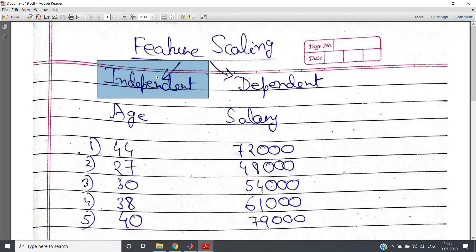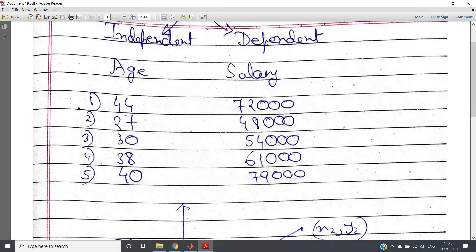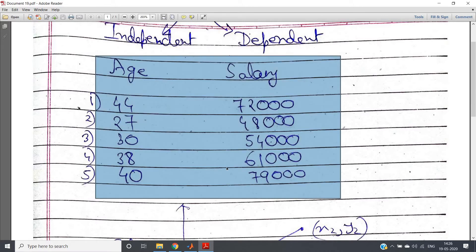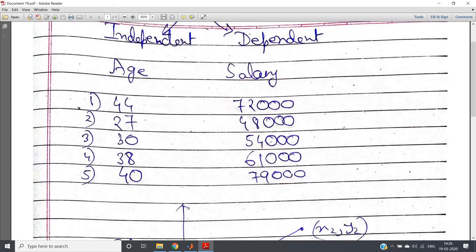For example, suppose we are having one age and salary dataset. We can predict the salary using this age, so age becomes independent data set, salary becomes dependent dataset. Now see, age values are very small with respect to salary, because salary is typically very high value, more than 10,000, and age is within 100.